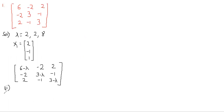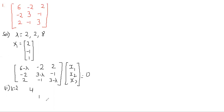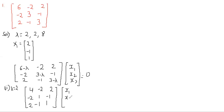In Case 2 we substitute λ=2 and find the generalized eigenvector. If we substitute λ=2 into (A−λI), what we get is: 6−2=4, 3−2=1, 3−2=1, and then −2−2 gives −2, 2−1 gives 1, and −1. The resulting matrix multiplied by [x1, x2, x3] equals 0.